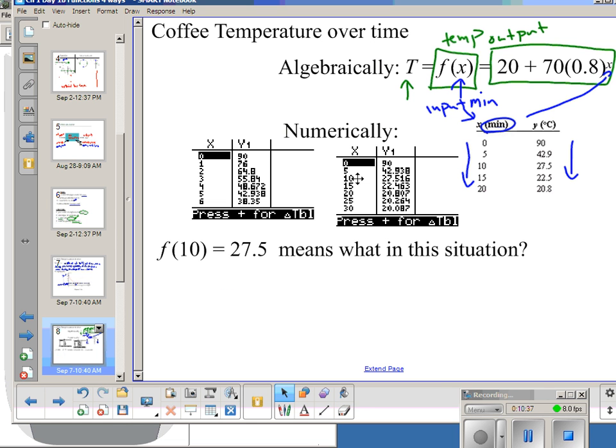So, if I'm confronted with something in this notation, f of 10 equals 27.5, what does it mean in this situation? Well, 10 is the x. That's my input. You input this into my function. And so, this is the minutes. And my output is the answer that I get.